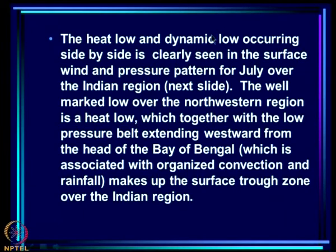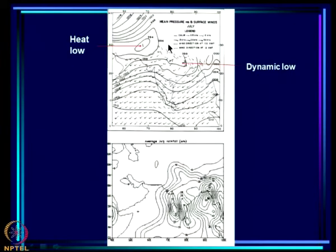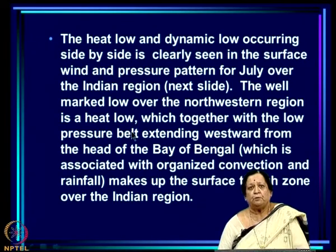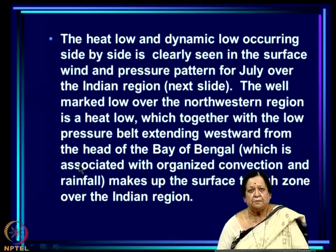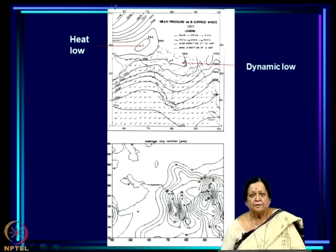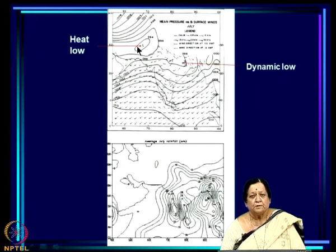The heat low and dynamic low occurring side by side is clearly seen in the surface wind and pressure pattern. The well-marked low over the northwestern region is a heat low, which together with the low pressure belt extending westward from the head of the Bay of Bengal — associated with organized convection and rainfall — makes up the surface trough zone over the Indian region. Part of it is a dynamic low, and lying side by side is the heat low.